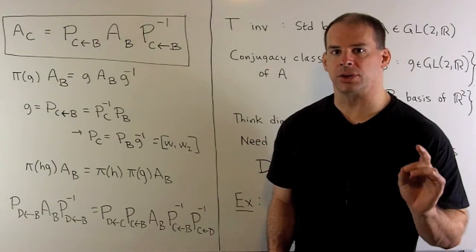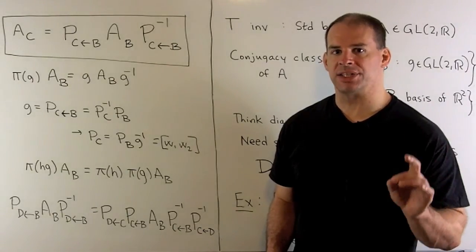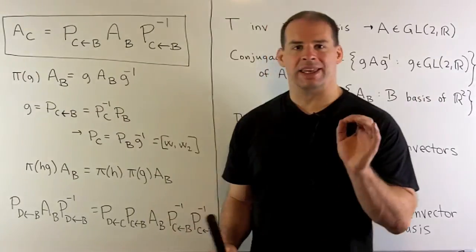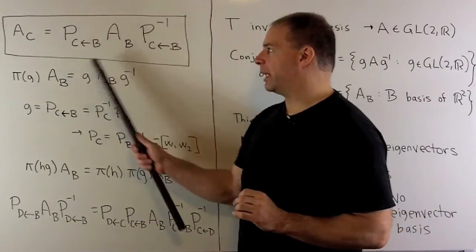Let's take a closer look at that last equation. If we change from basis B to basis C, A_C is going to be given by taking A_B that we conjugate by the change of basis matrix.